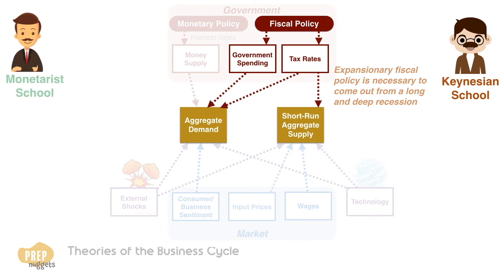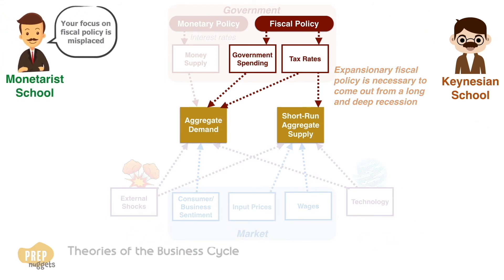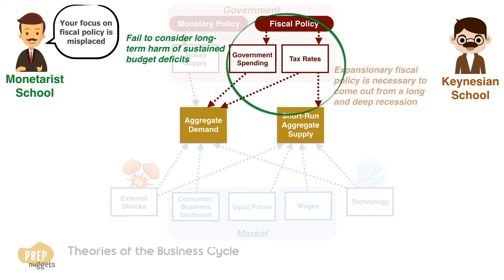The Monetarist School, however, objects to the Keynesian recommendation for government intervention for a number of reasons. Monetarists believe that the Keynesian focus on fiscal policy is misplaced. The Keynesian model fails to consider the long-term harm that can be caused by sustained government budget deficits. Besides, there may be a lag in the stimulative effects of fiscal policy, which may be too slow to prevent an economic crisis from blowing up.